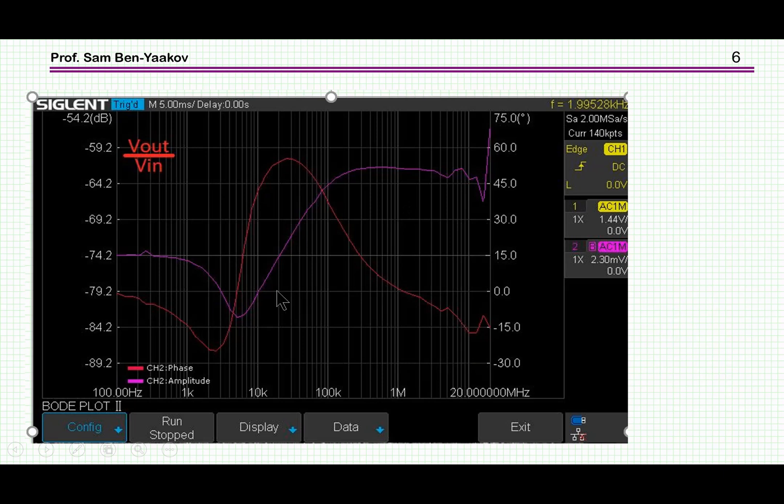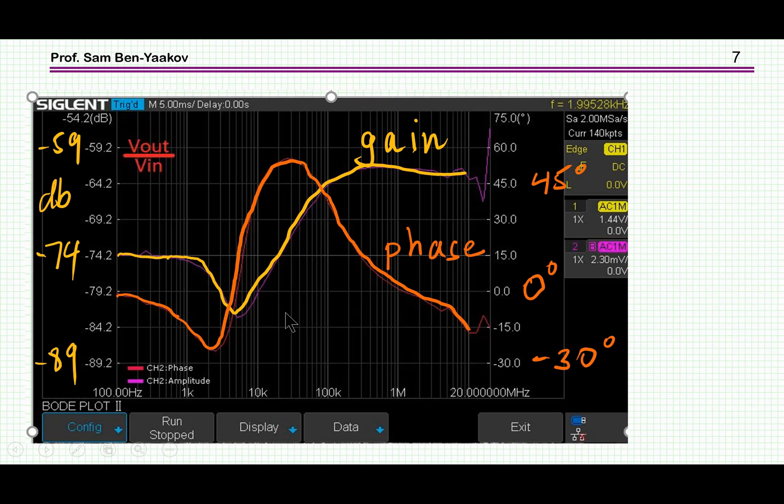So here are the results. Since this is pale, I've retraced it. Here we see the gain starting at minus 74 as expected at low frequency. And the phase starts at zero degrees because this is a resistive divider. And then it goes very strange. The gain goes down, that is more attenuation, and then it goes up to a higher level. The phase has a lag here, an advance here, and then it goes back to a lag.